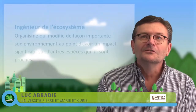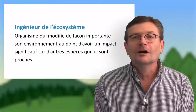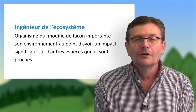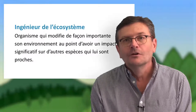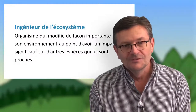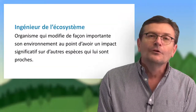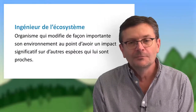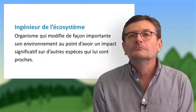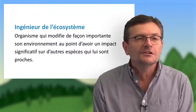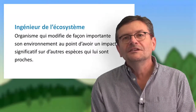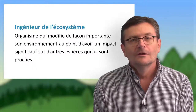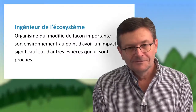Le concept d'ingénieur de l'écosystème a été proposé en 1994 par Clyde Jones et il désigne un organisme qui modifie de façon importante son environnement au point d'avoir un impact significatif sur d'autres espèces qui lui sont proches. Formellement, l'ingénieur de l'écosystème fait passer un élément physico-chimique, parfois vivant, de l'environnement d'un état 1 à l'état 2. L'exemple emblématique, c'est le castor.